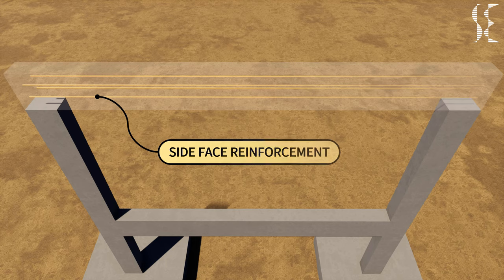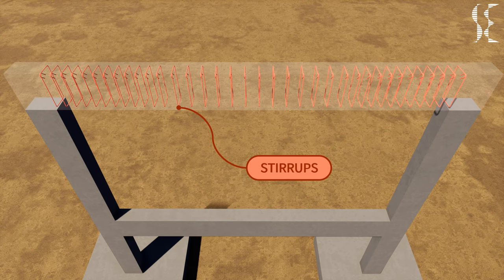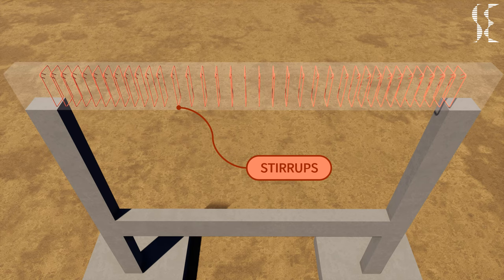Next we have stirrups or transverse reinforcement which resist the shear stresses in the beam and hold the longitudinal reinforcement in place. Stirrups prevent shear, flexural and torsional cracks which occur at 45 degree to the main axis of the beam. Stirrups also add to the shear strength of the concrete.